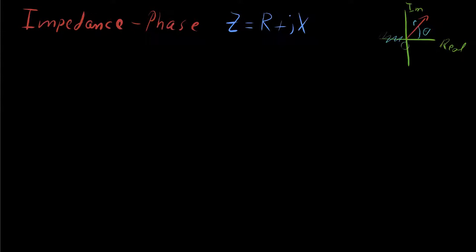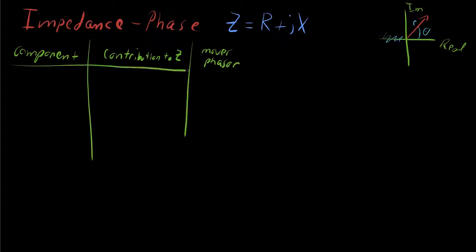To do so, we first have to build a chart, a table that breaks down each of the components and tells us their contributions to impedance and what they do to this phasor diagram, how they move the vector if you add additional components in series to a given impedance. Let's build this chart. We've got the component here, its contribution to impedance Z here, and the direction it moves the phasor here.